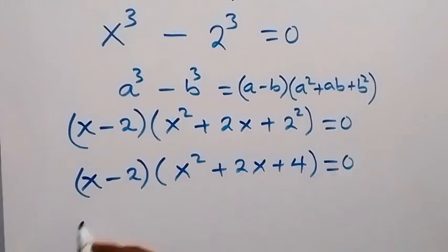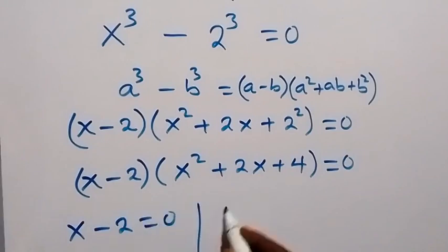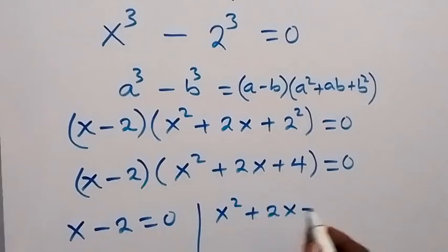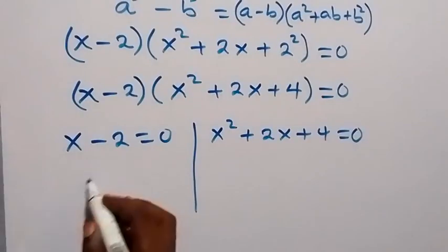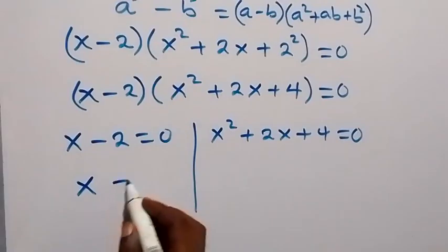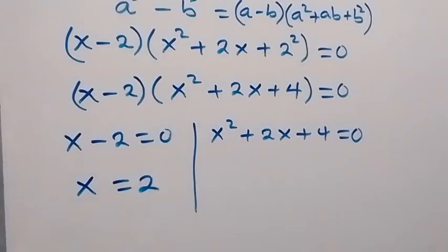Then the two cases here are x minus 2 equals 0, and we have x square plus 2x plus 4 equals 0. Then on this side we have x equals to 2, which is the real solution here.